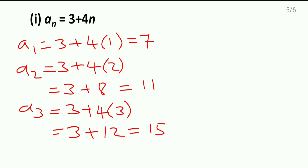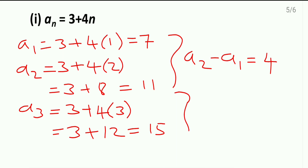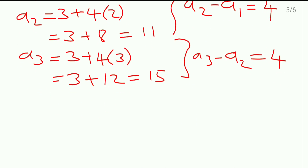Now, finding the difference: a2 − a1 = 11 − 7 = 4, and a3 − a2 = 15 − 11 = 4. The common difference is the same, which means this is forming an AP. So here, it is an AP.